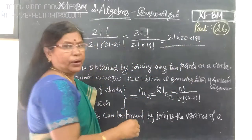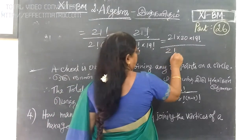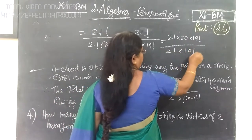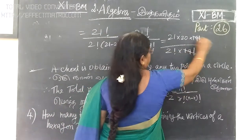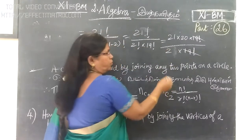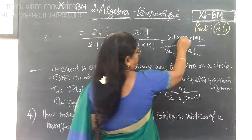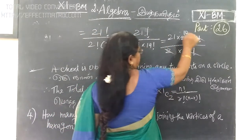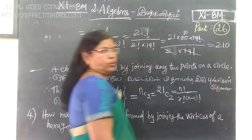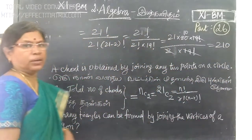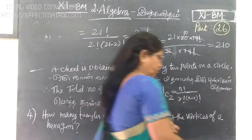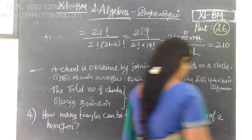...divided by 2 factorial times 19 factorial. 2 factorial is 2, so 2 factorial is 2. The answer is 210. It will be excellent.